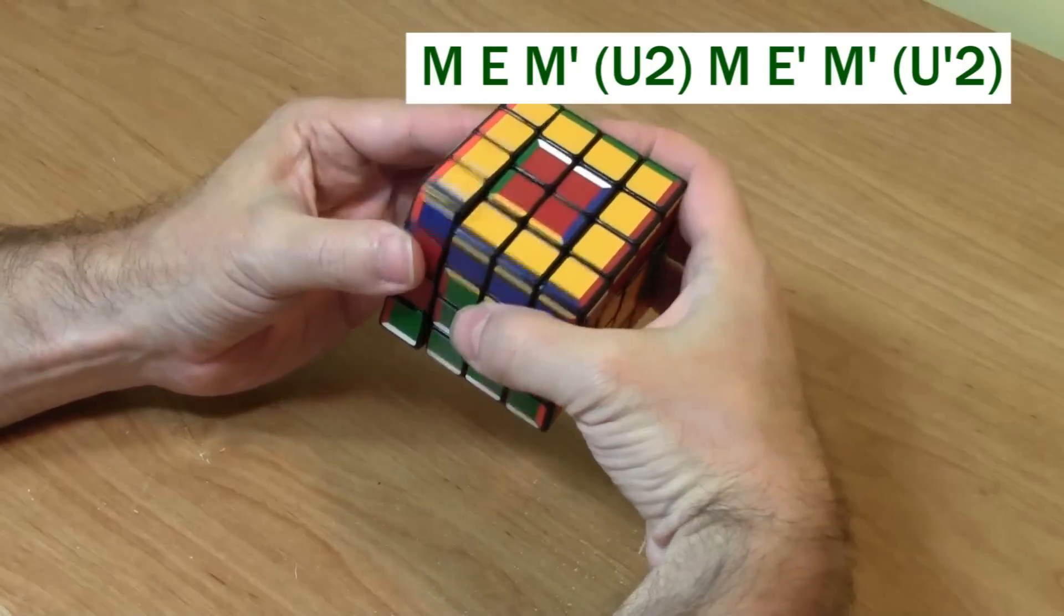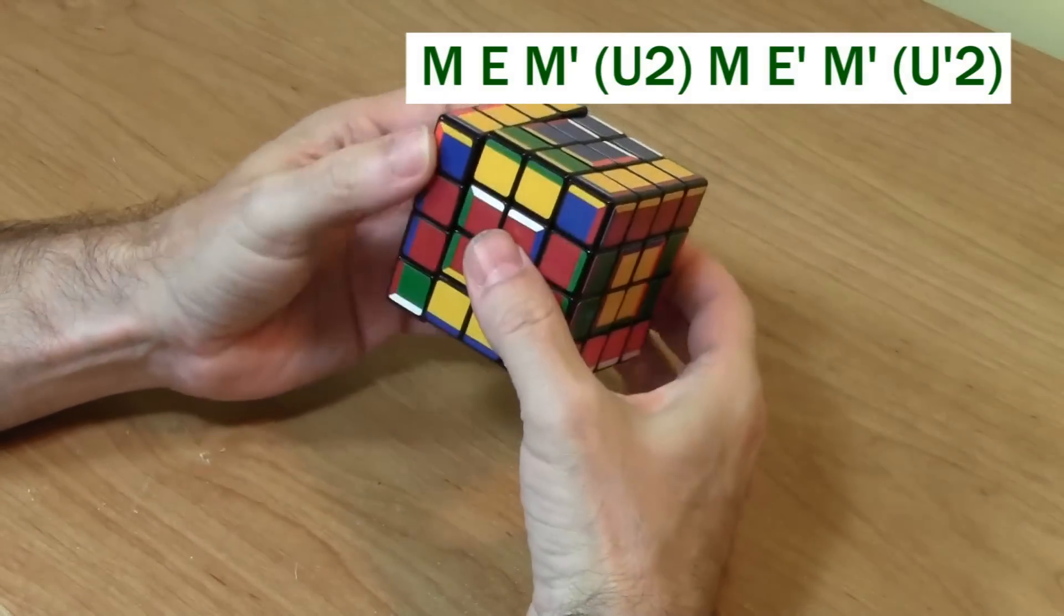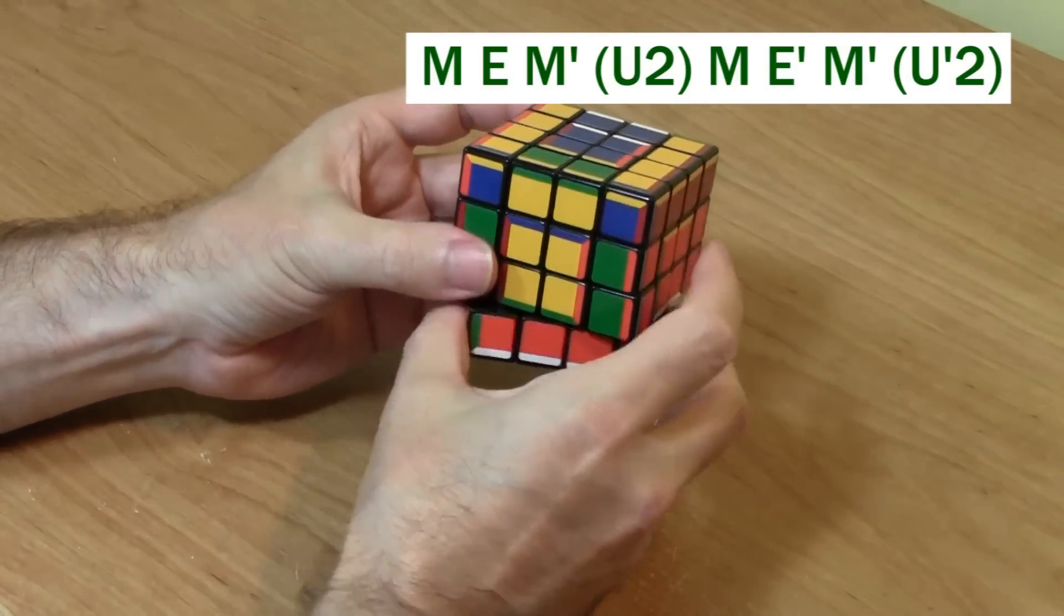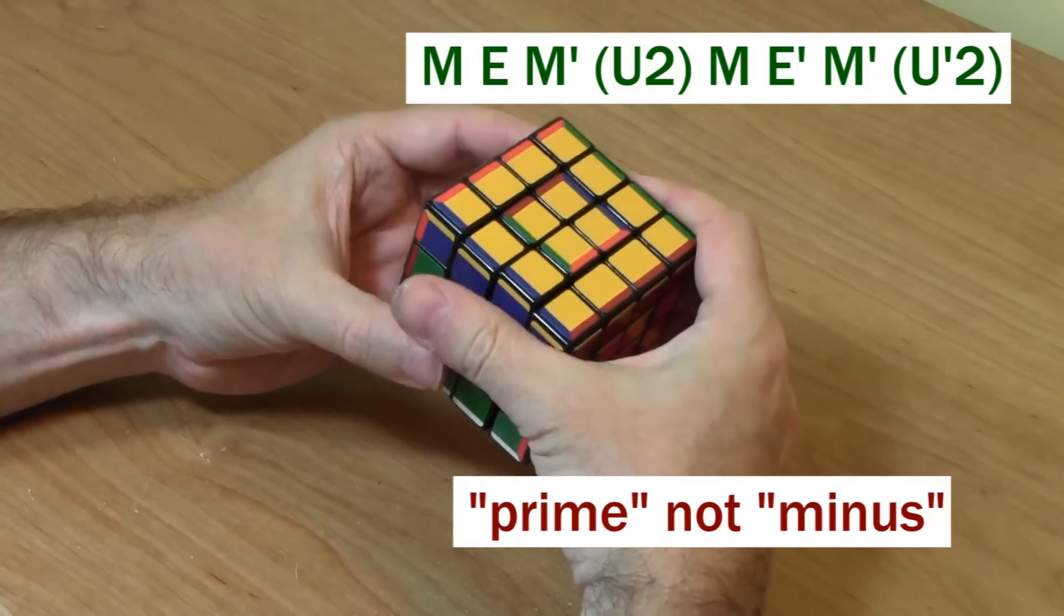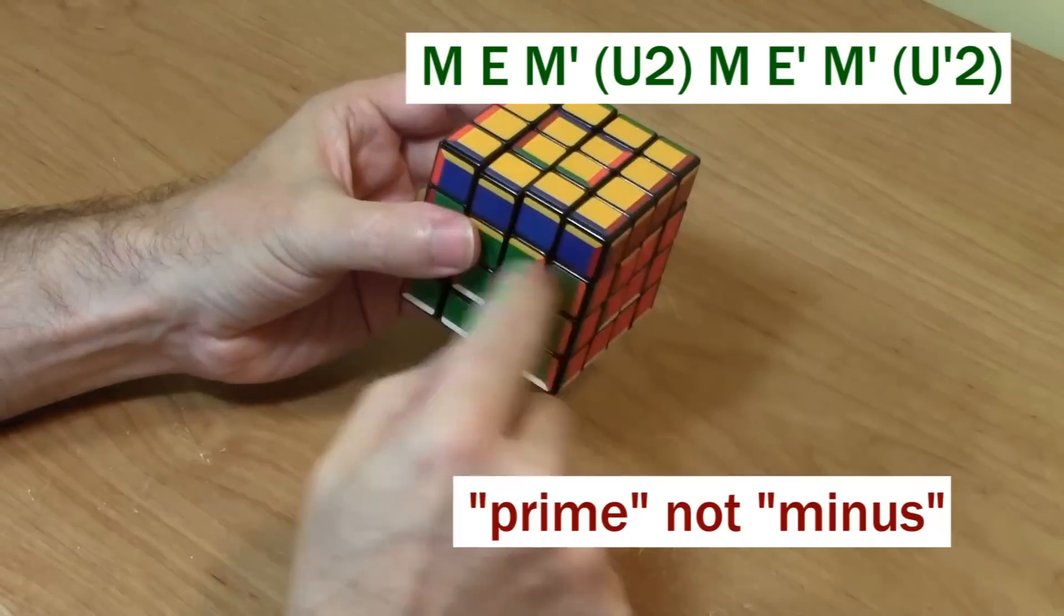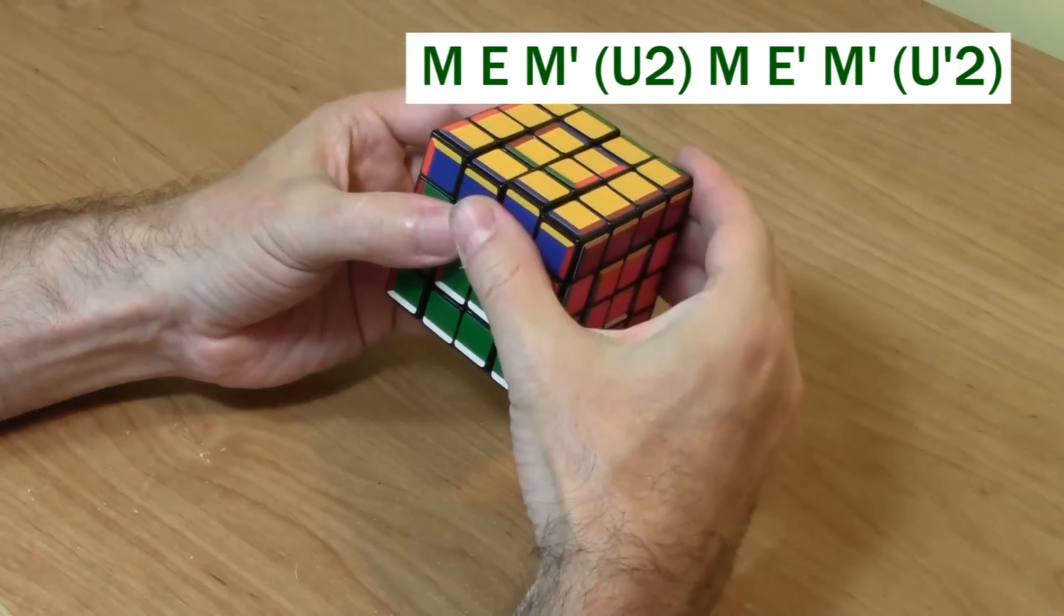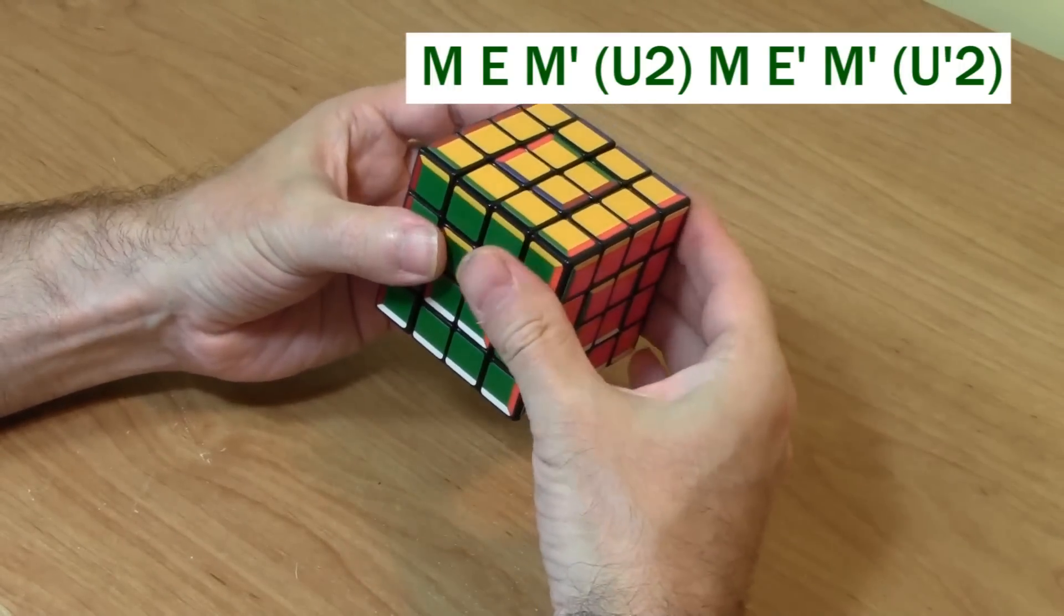Then you just reverse your steps. You do an M. You do an E minus. Then you do an M minus. And then you have to do to the top. If you want everything to line back up, you have to do to the top what you do to the bottom. So 180 degrees.